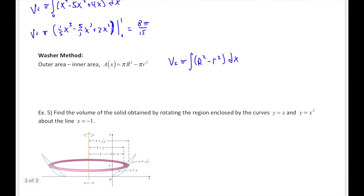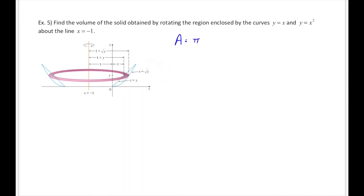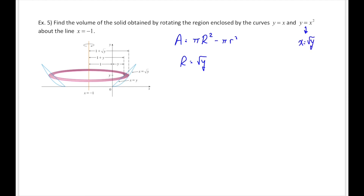Let's try one last one. Same curves y equals x and y equals x squared, but this time we're rotating around the vertical line x equals negative 1. We are rotating horizontally, which means we'll have dy and our curves need to be in terms of y. Our area of one disk is π outer-radius squared minus π inner-radius squared. Our outer radius is the distance from x equals negative 1 to x equals square root of y, which is square root of y subtract negative 1, giving square root of y plus 1. Our inner radius is the distance from y equals x (so x equals y) to negative 1: that's y subtract negative 1, or y plus 1.